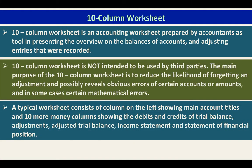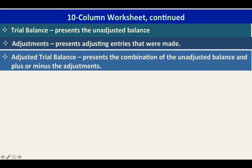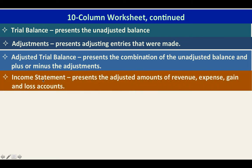A typical worksheet consists of a column on the left showing main account titles, and 10 more money columns showing the debits and credits of the trial balance, adjustments, adjusted trial balance, income statement, and statement of financial position. The 10-column worksheet presents the debit and credit of adjustments, the debit and credit of the adjusted trial balance, and the debit and credit of the income statement. The amounts in the income statement are based on the adjusted trial balance.